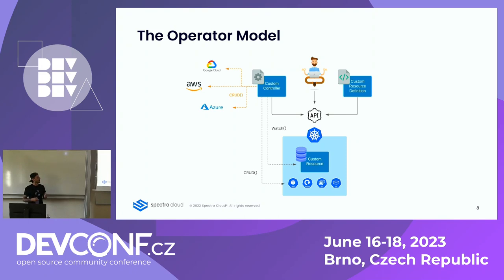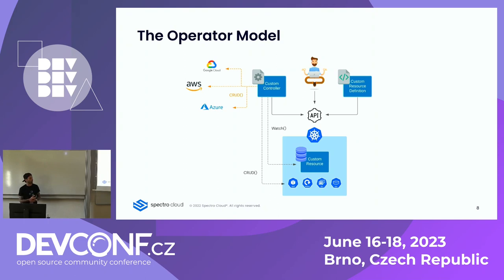So we have three things: the operator, the stateful set, and the CSI. Those are the three components you need to think about when deploying databases inside Kubernetes. You don't have to build this yourself — for the operator, you can find your preferred vendor. Like Mongo — they have enterprise and community operators. There are companies specialized in building operators. If you go to operatorhub.io, you will find operators to manage pretty much everything from Redis to MongoDB.